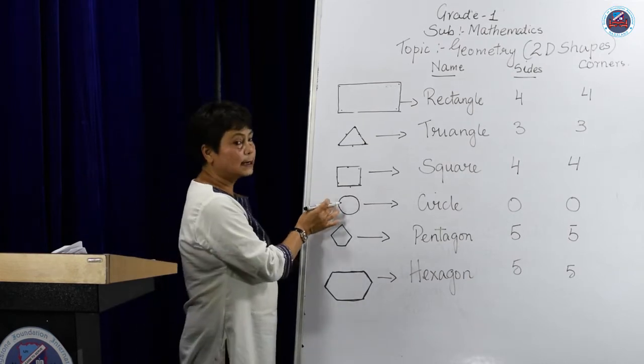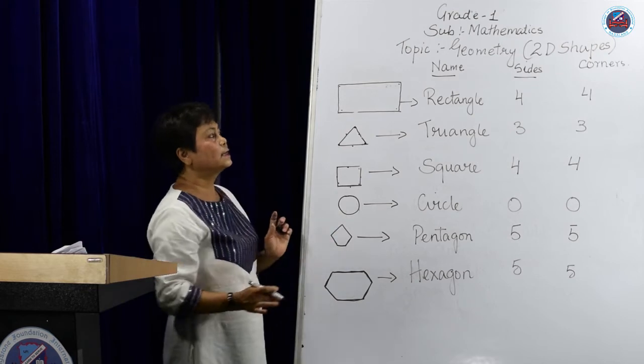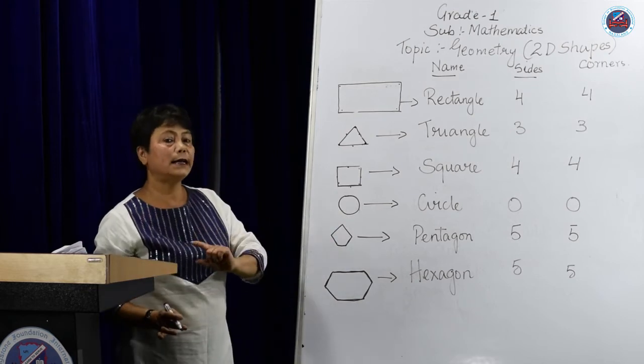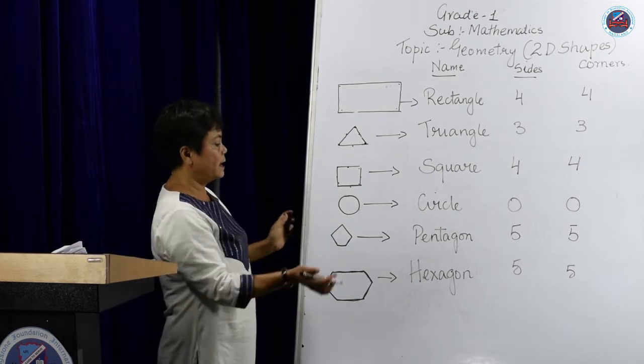Now, this is a circle. A circle does not have any sides or any corners.